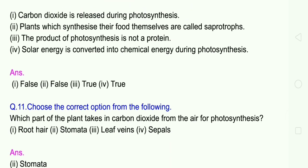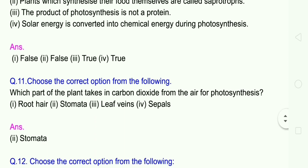Question 11: Choose the correct option. Which part of the plant takes in carbon dioxide from air for photosynthesis? 1 root hair, 2 stomata, 3 leaf veins, 4 sepals. The answer is stomata. The pores absorb the air.